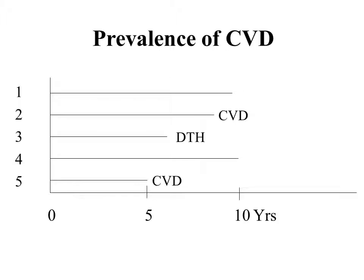Let's look at a graph used frequently in the book to describe what happens to participants over the length of a study. In this study we have five different participants observed over a total of 10 years. Participant five developed cardiovascular disease at the end of year five. Participant four was free of cardiovascular disease the entire 10 years. Participant three died after six years. Participant two developed cardiovascular disease after about nine years, and participant one was free over the entire length of the study.